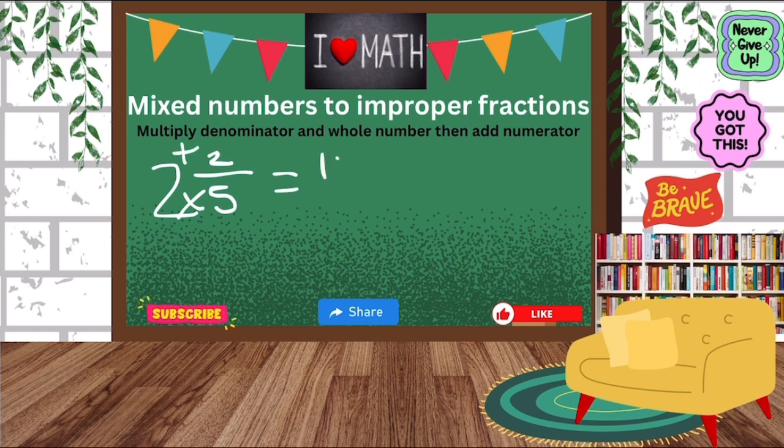So our denominator is 5, our whole number is 2, 5 times 2 is 10, add the 2 at the top, which is 12. That's how we got 12 fifths because our denominator stays the same. Is it getting easier?